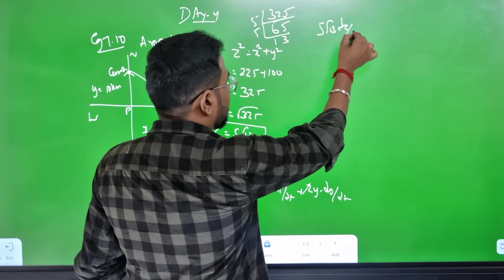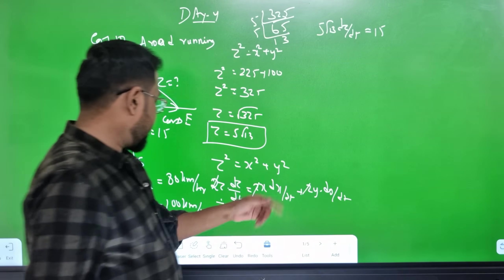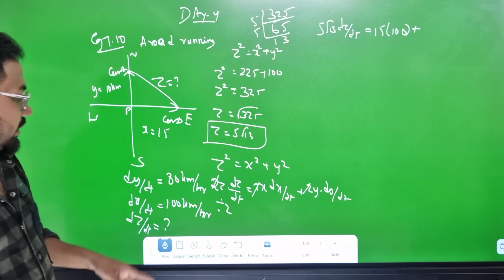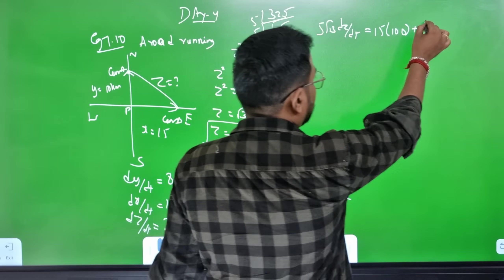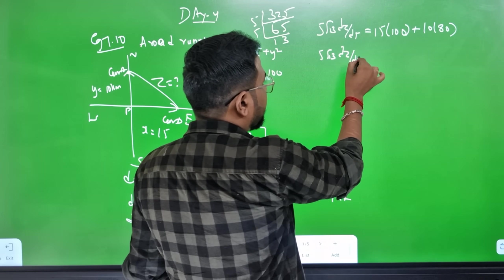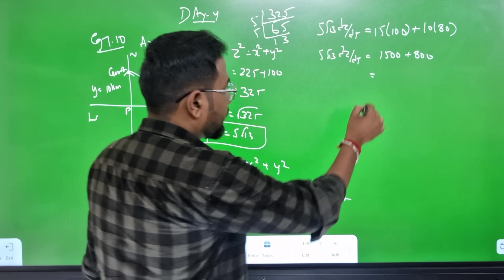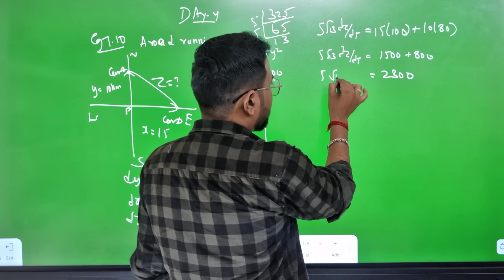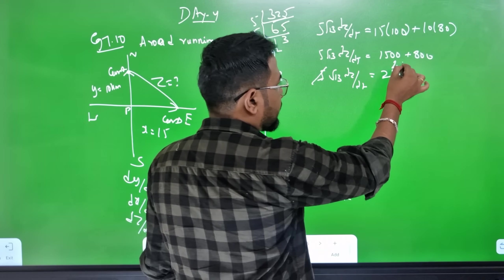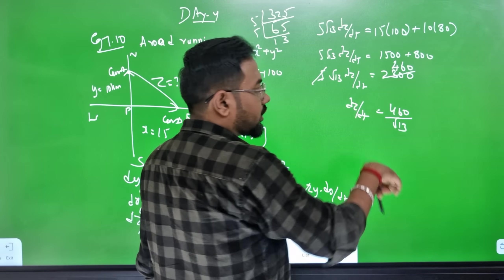Substituting: z = 5√13, x = 15 with dx/dt = 100, and y = 10 with dy/dt = 80. So 5√13 · dz/dt = 15×100 + 10×80 = 1500 + 800 = 2300.